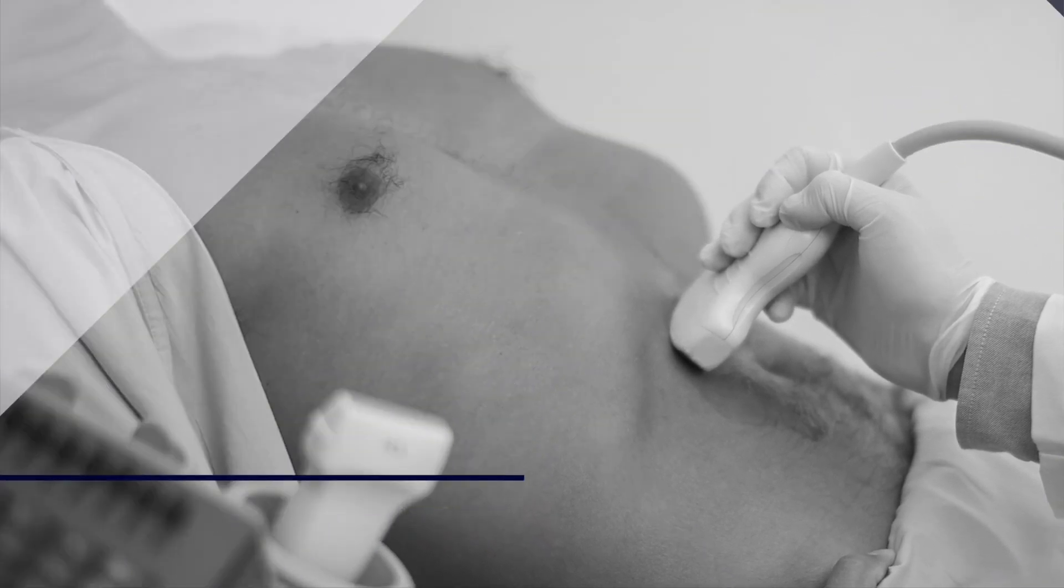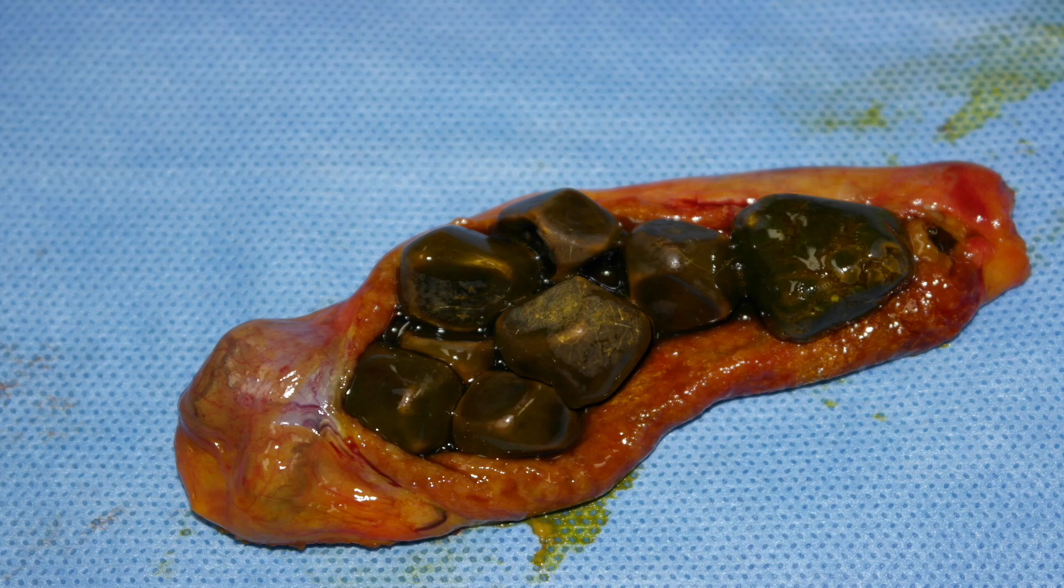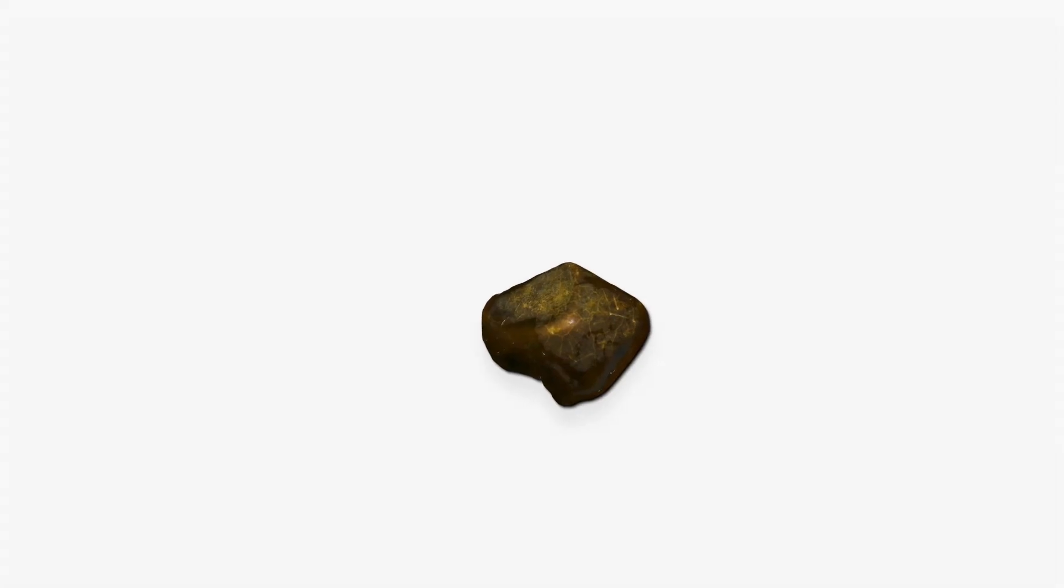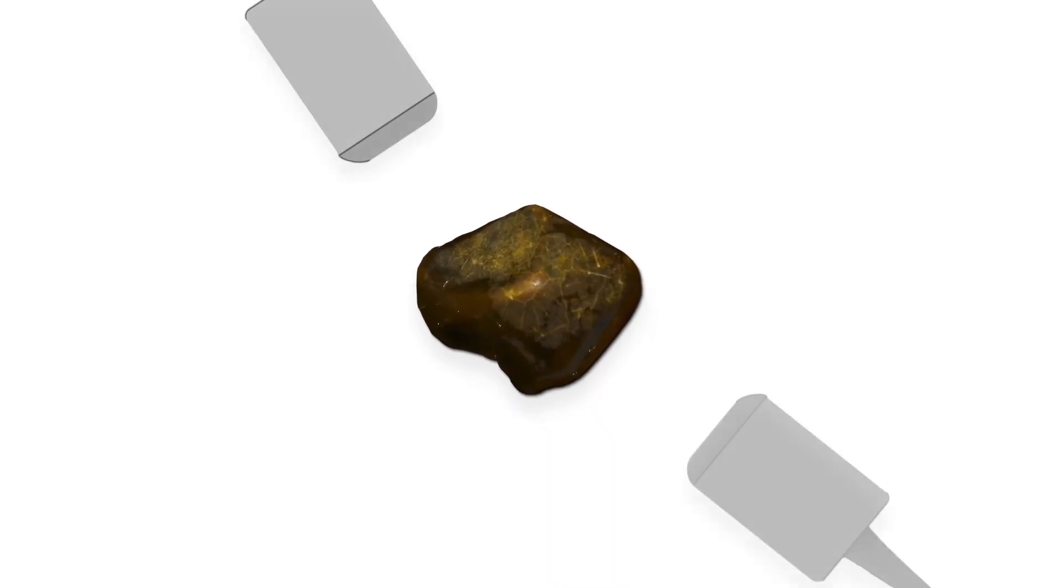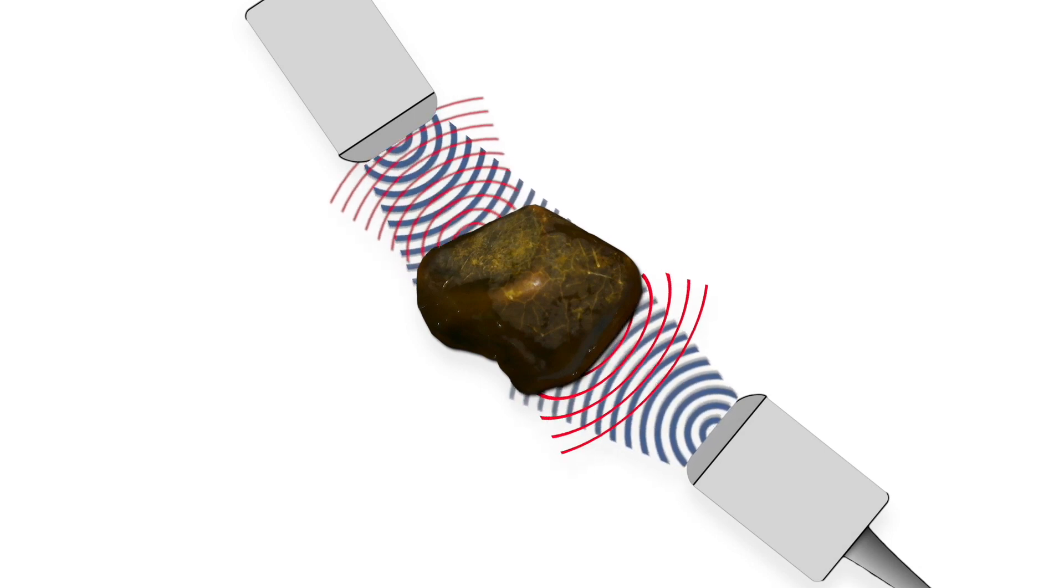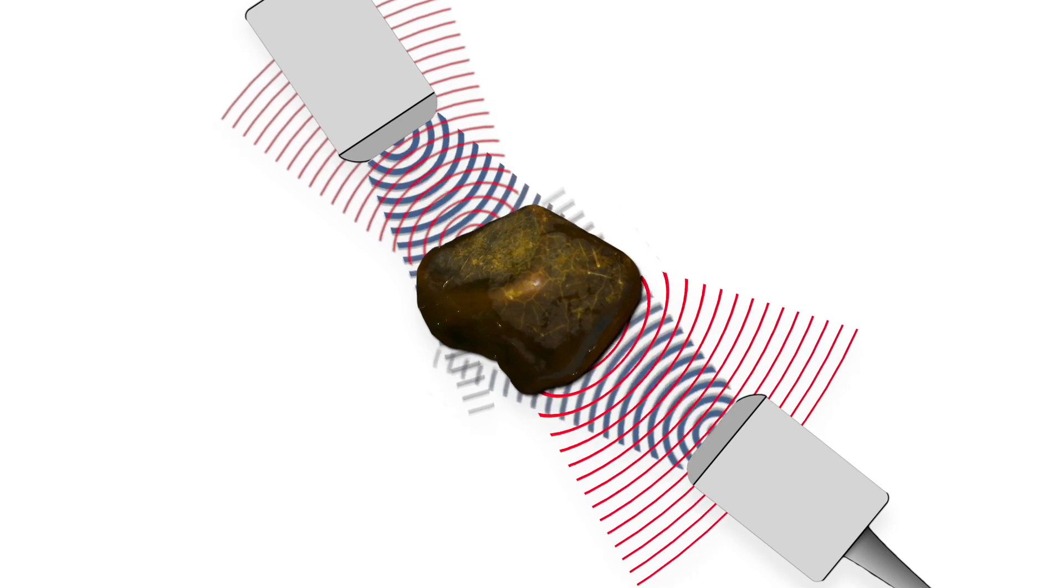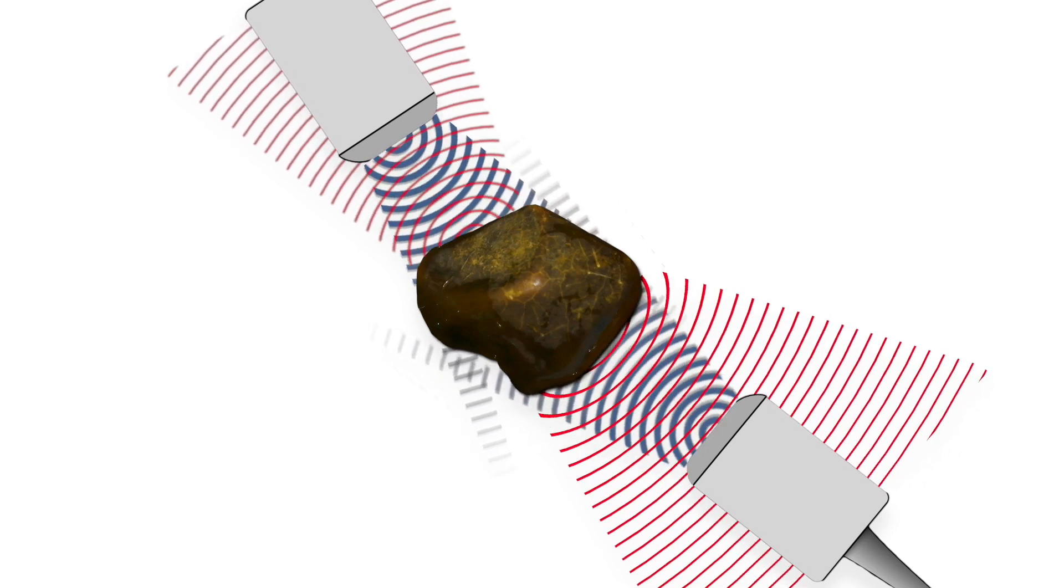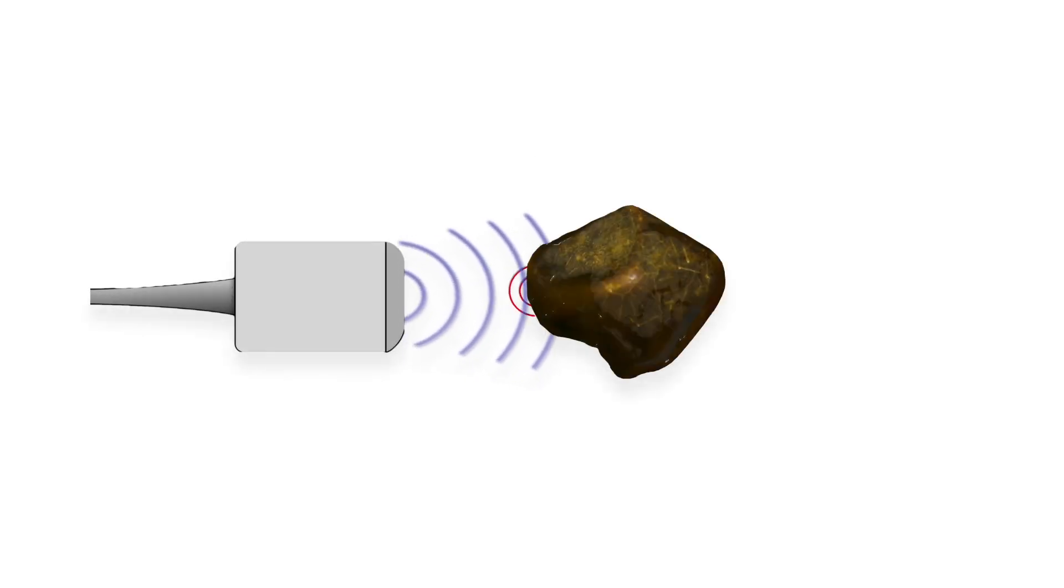So why do gallstones show up? Well, basically, gallstones, as their name suggests, are really solid structures. And as such, they tend to rebound most if not all of the sound waves that hit them. So knowing what we now know, you should be able to predict what we look for when we try to see gallstones on ultrasound.